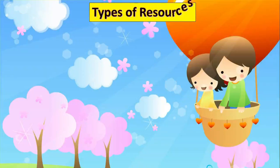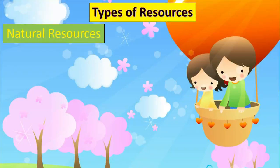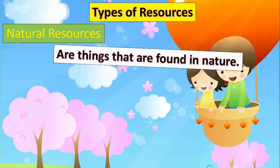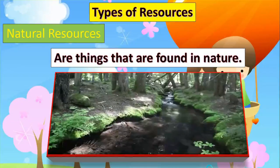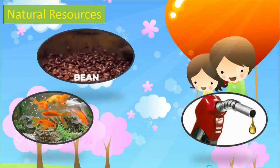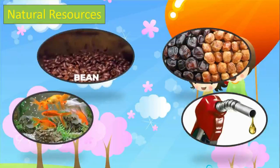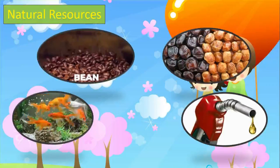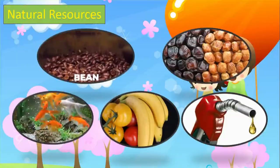We have here types of resources. First is natural resources, or things that are found in nature. For example, coffee beans, dates, fish, fruits and vegetables, and fuel.